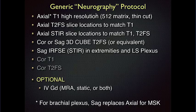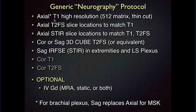A general neurography protocol really focuses on axial or short-axis T1 and high-resolution T2 fat-sat images. For the brachial plexus, a sagittal would be more perpendicular to the nerves than transverse axial, so we do those type of images. We always do some sort of coronal or sagittal 3D sequence, and often use STIR to complement things, especially for looking for muscle edema.